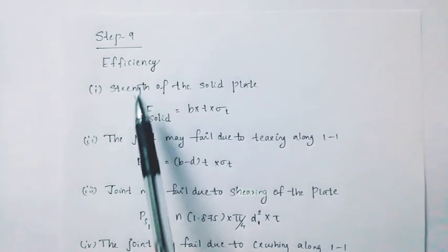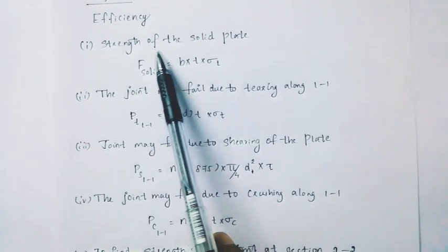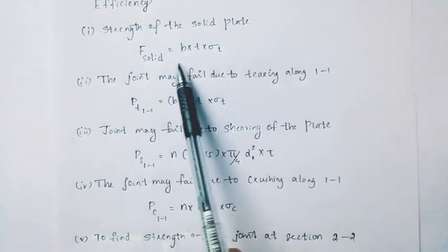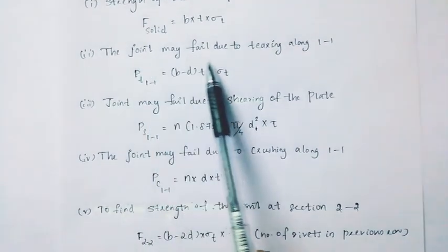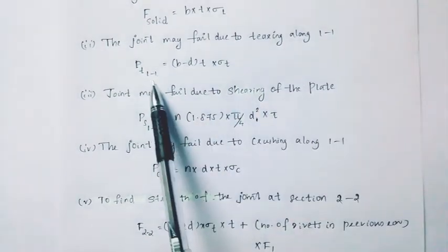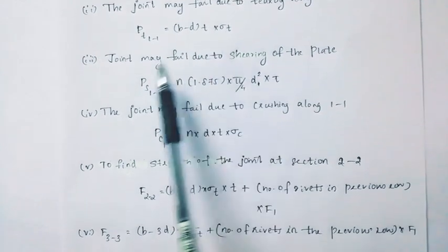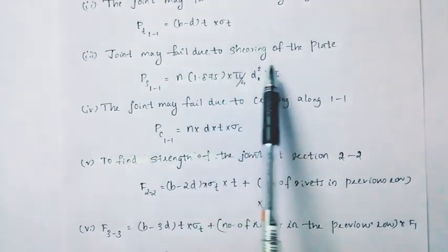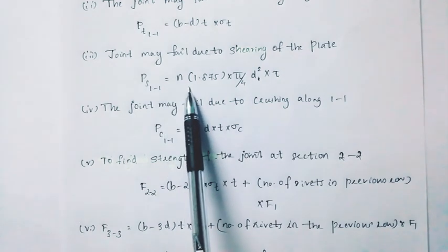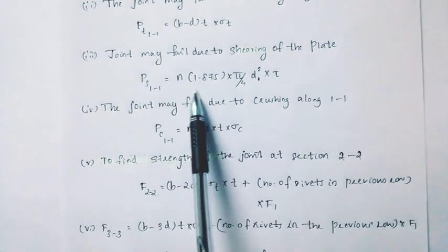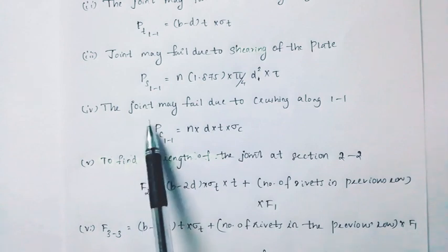Step 9 is efficiency. Strength of the solid plate: F solid equals B into T into sigma T. The joint may fail due to tearing at section 1-1: P T1-1 equals B minus D into T into sigma T. The joint may fail due to shearing: P S1-1 equals N into 1.875 into pi by 4 into D squared.